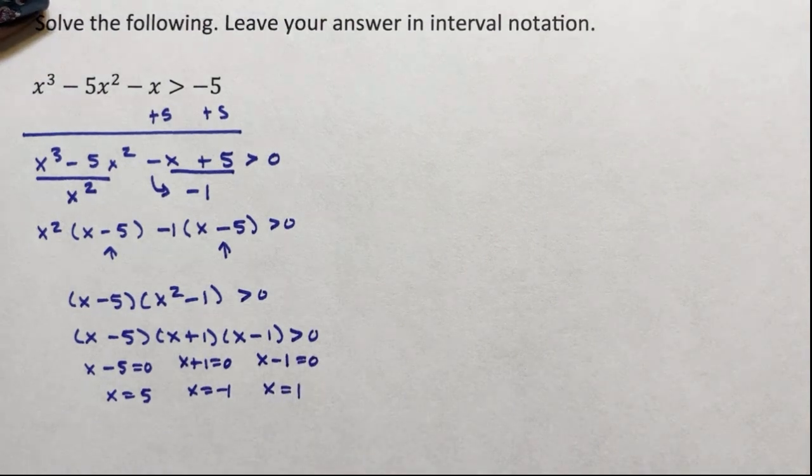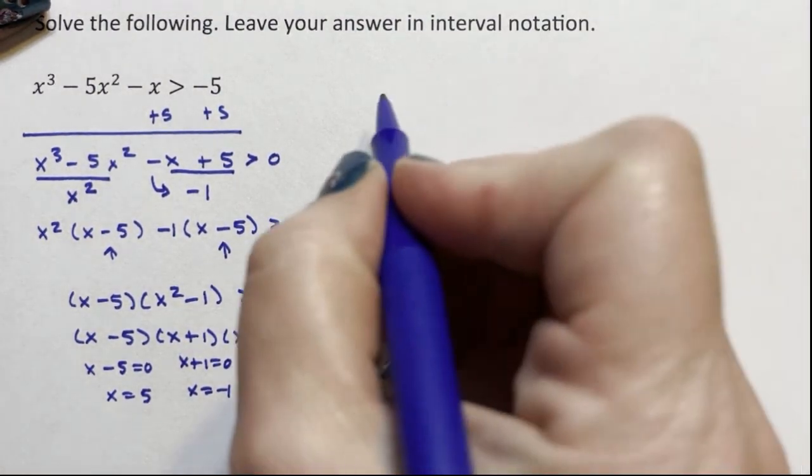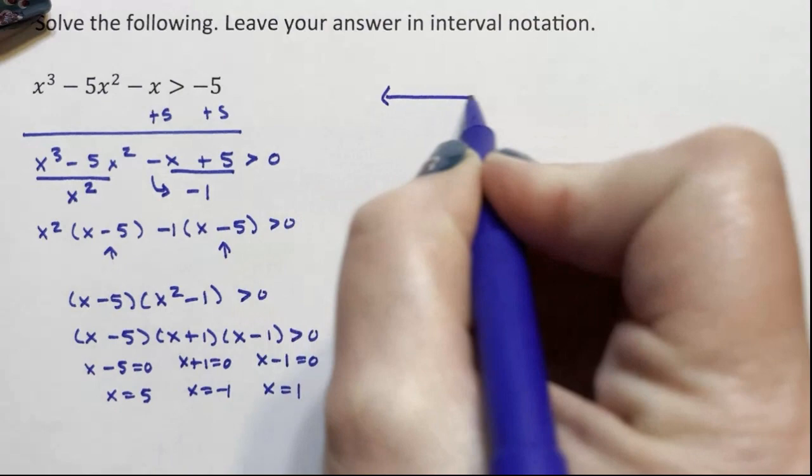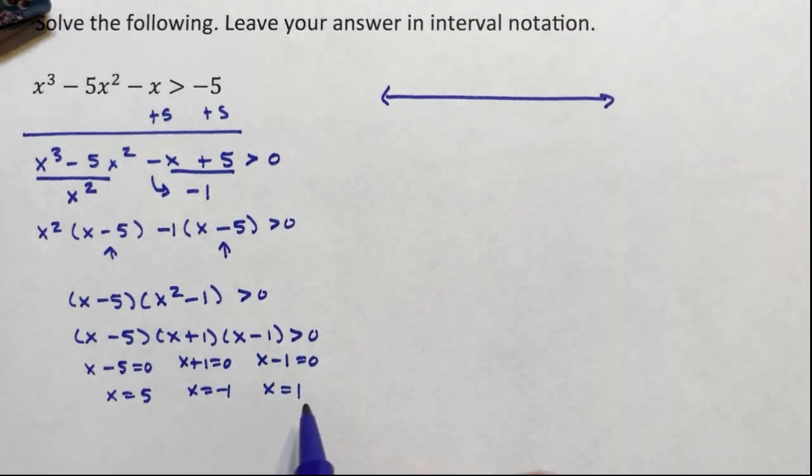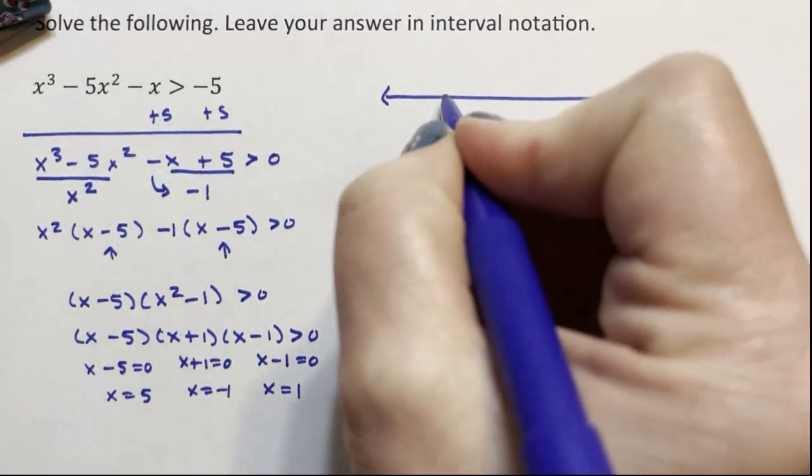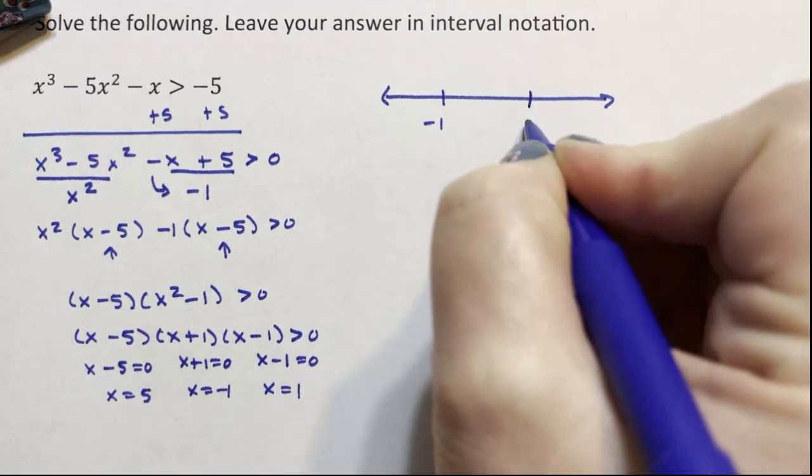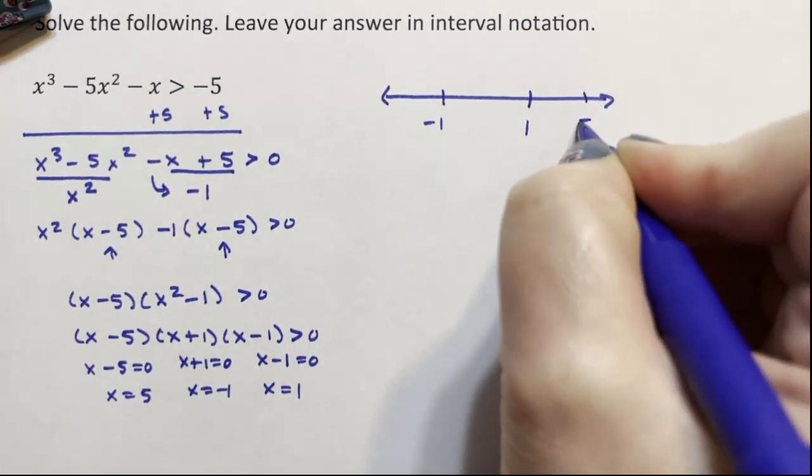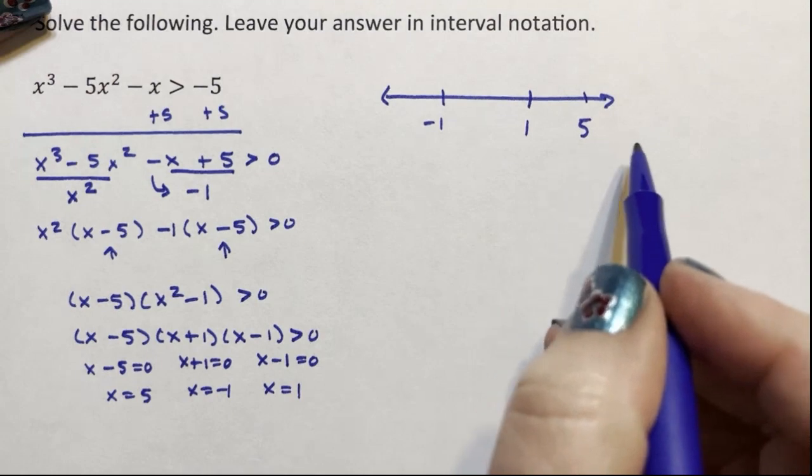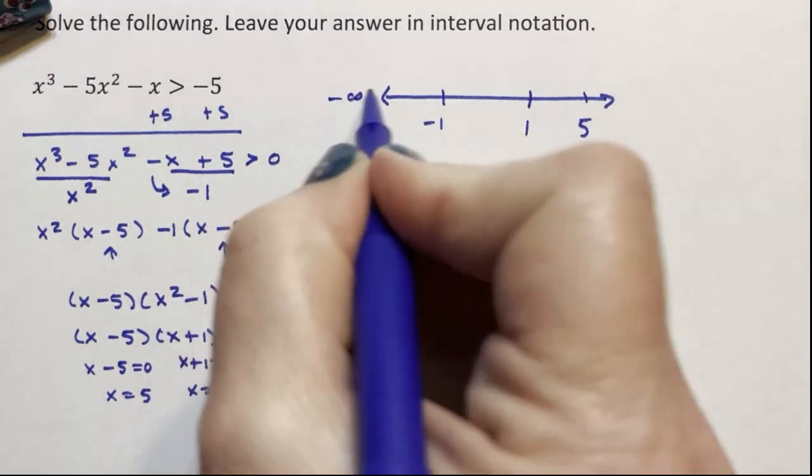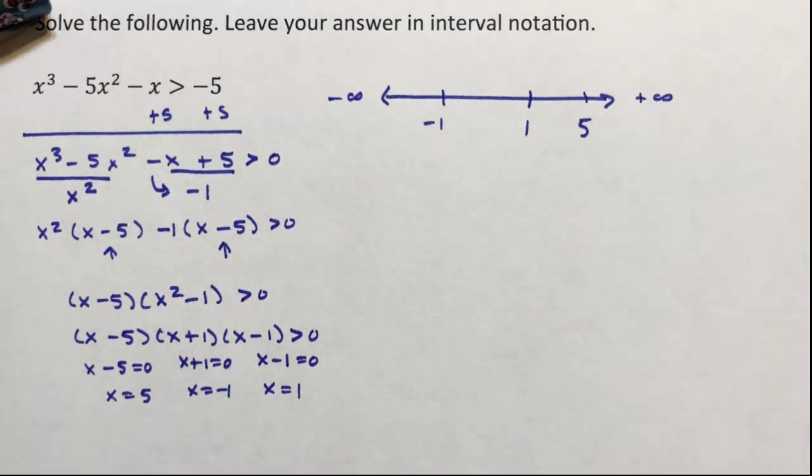That would be it if I was solving this, but I have an inequality. So what I need to do is look at a number line, and I'm going to put these stops in: negative 1, 1, and 5. Yes, I put these in order. Negative 1, 1, 5 with negative infinity to the left and positive infinity to the right.